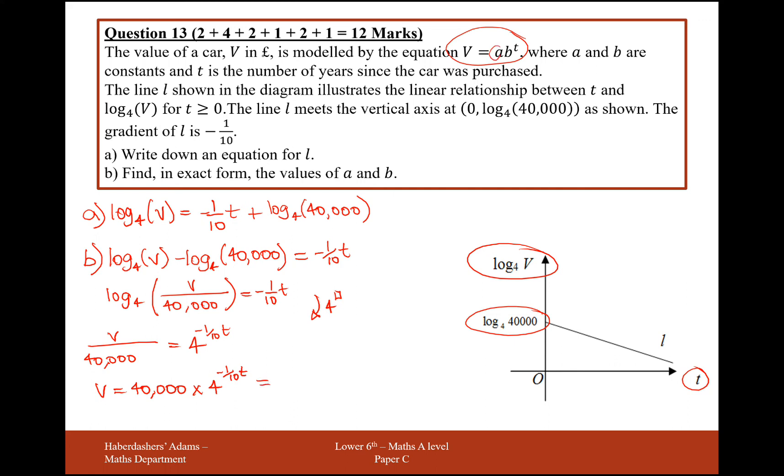However, we're not quite there yet, because if you look up here, a, that's 40,000, but b is just on its own here. It doesn't have any minus a tenth up there times t. So what we're going to have to do is split up the minus a tenth and the t here. So it would be 4 to the power of minus a tenth, all to the power of t. What I've done from this side here to this side here is effectively the opposite and the reverse of the indices law where I multiply my indices if I've got an indice of an indice.